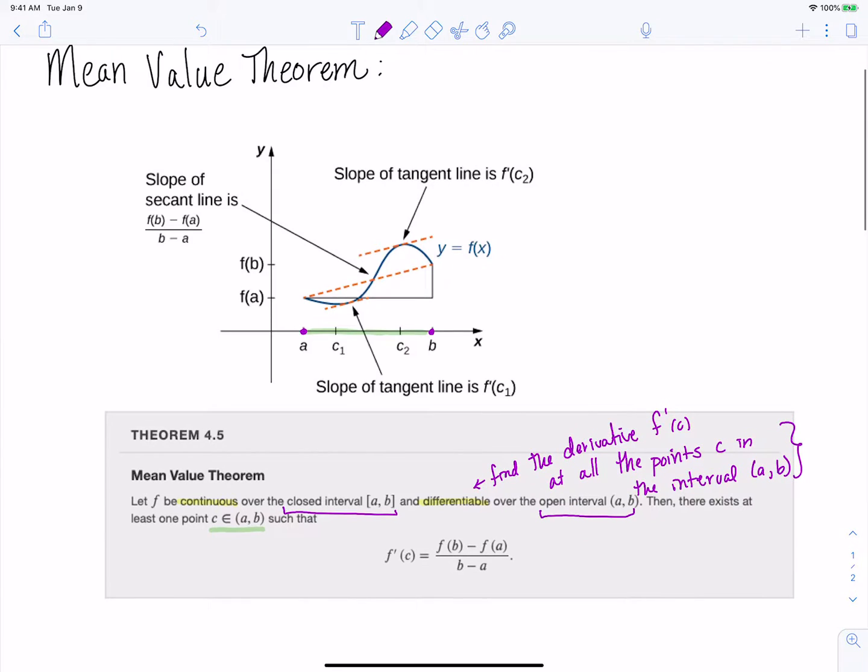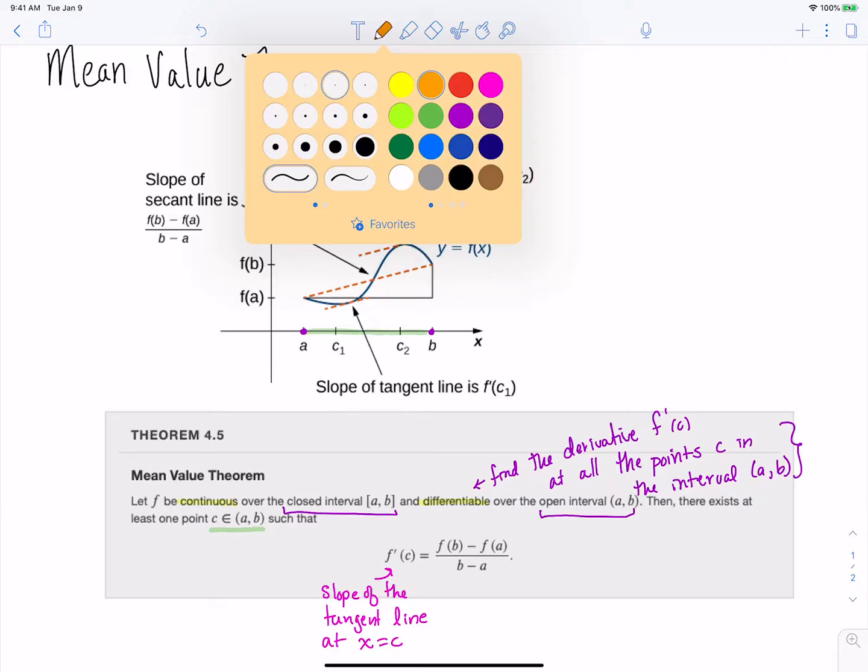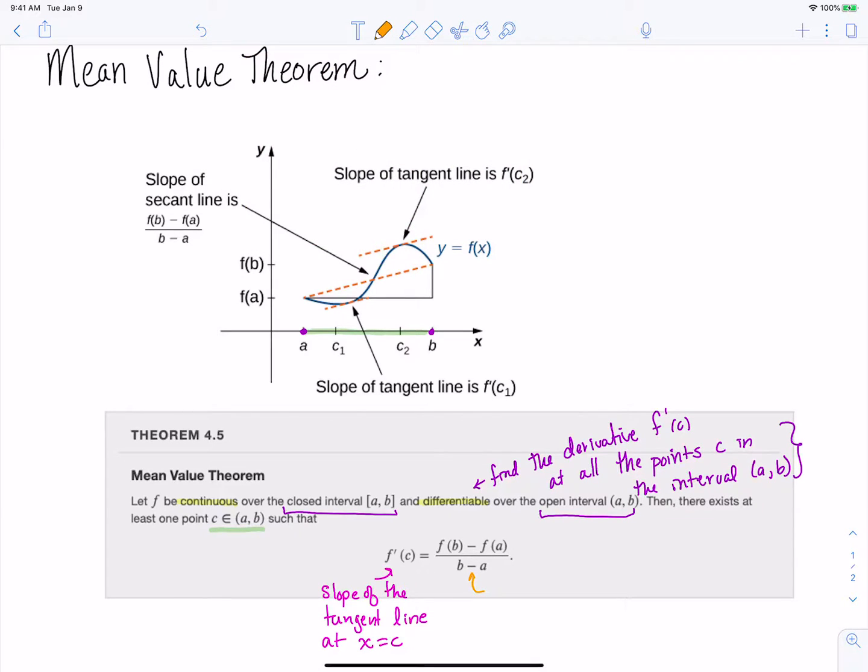So taking this definition apart a little bit, remember that f'(c), that is the slope of the tangent line at x equals c. That's our derivative at that point c, which is the slope of our tangent line. Our other part of this equality here, that's our difference quotient, or the other way to say this is the slope of the secant line.